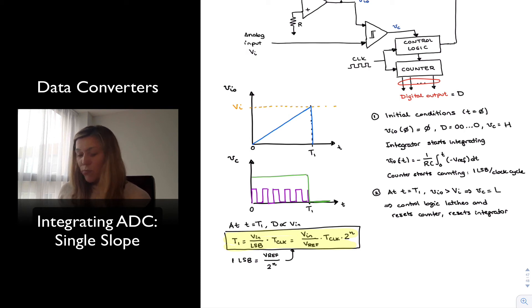Notice that one of the major limitations of this configuration is the fact that my T1, the time that it takes for my VI out to integrate, is proportional to 2 to the N. So the major limitation, as we had previously mentioned, is speed. We need to allow for 2 to the N clock cycles. T1 is proportional to 2 to the N times the clock period.